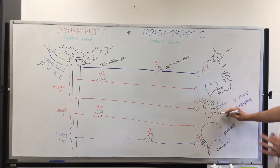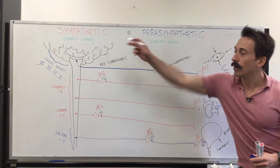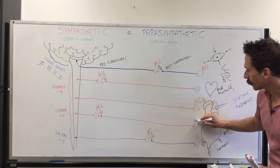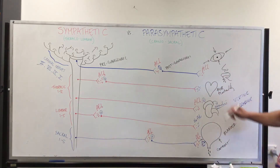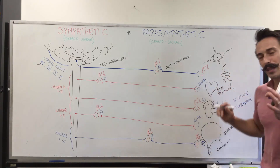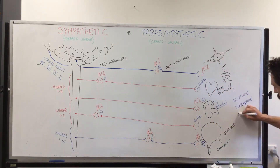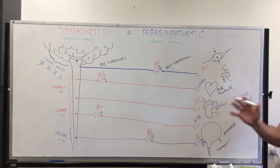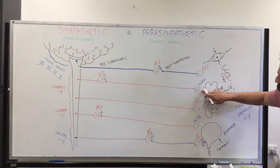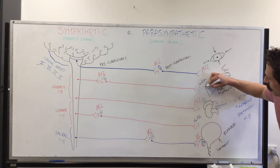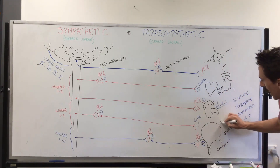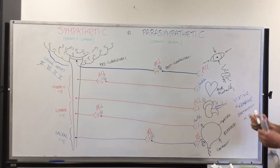The neurotransmitter released from the post-ganglionic neuron for the sympathetic nervous system is noradrenaline — or norepinephrine in American terminology — as opposed to adrenaline (epinephrine). Noradrenaline binds to adrenergic receptors, which have subcategories such as alpha and beta. These noradrenaline neurotransmitters stimulate the effector — increasing heart rate and contractility at the heart, or telling the bladder to relax. These are some of the key differences between the sympathetic and parasympathetic nervous system.